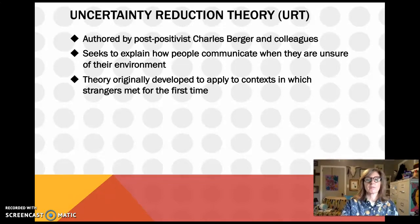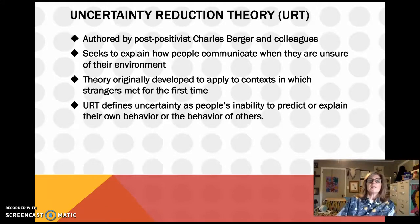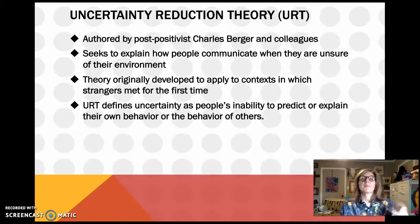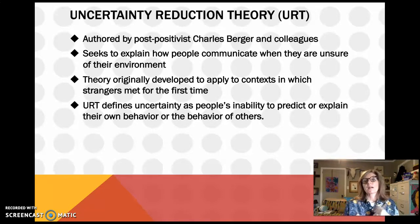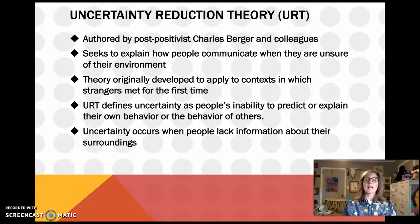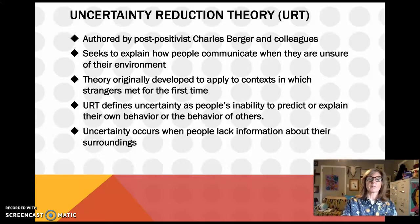You're at the bus stop, you're by yourself. And the theory defines uncertainty as people's inability to predict or explain their own behavior or the behavior of others — so it's both. We don't know how we're going to react depending on how they react, and we don't know how they're going to react either. Uncertainty occurs when people lack information about their surroundings.